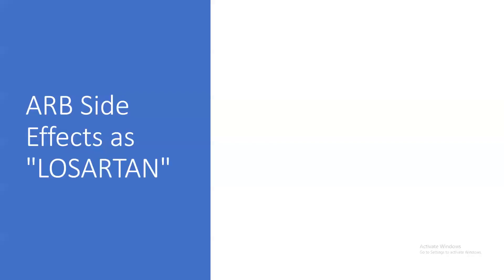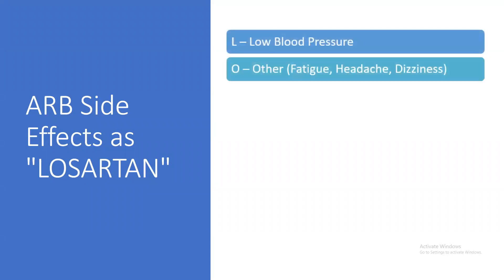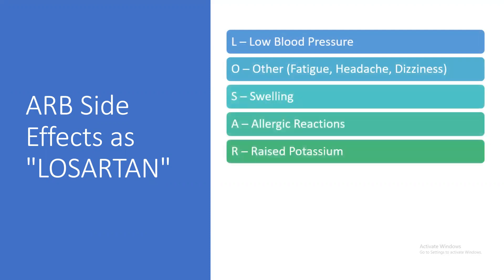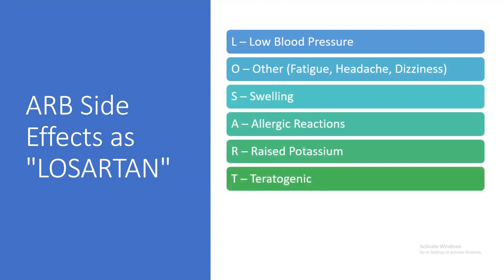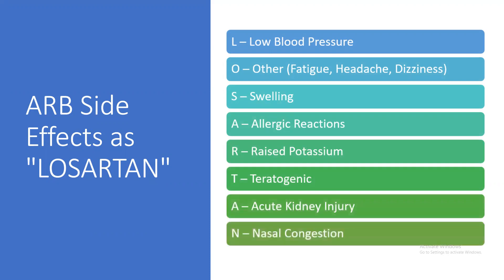The side effects of ARBs can be remembered using the word LOSARTAN: L for low blood pressure, O for fatigue, headache, and dizziness, S for swelling, A for allergic reactions, R for raised potassium, T for teratogenic effects, A for acute kidney injury, and N for nasal congestion.